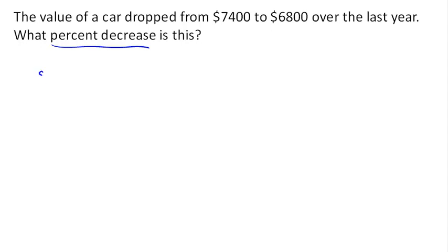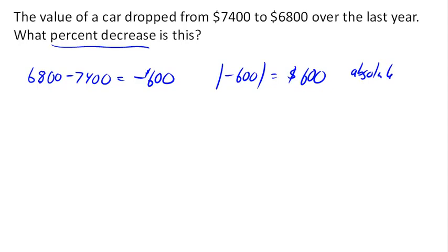If we take the new price minus the old price, we see that the price dropped by $600. So a $600 decrease. Now, usually when we talk about changes, it's easiest to talk about the absolute value of the change, which in this case would be $600, and we call this an absolute change.